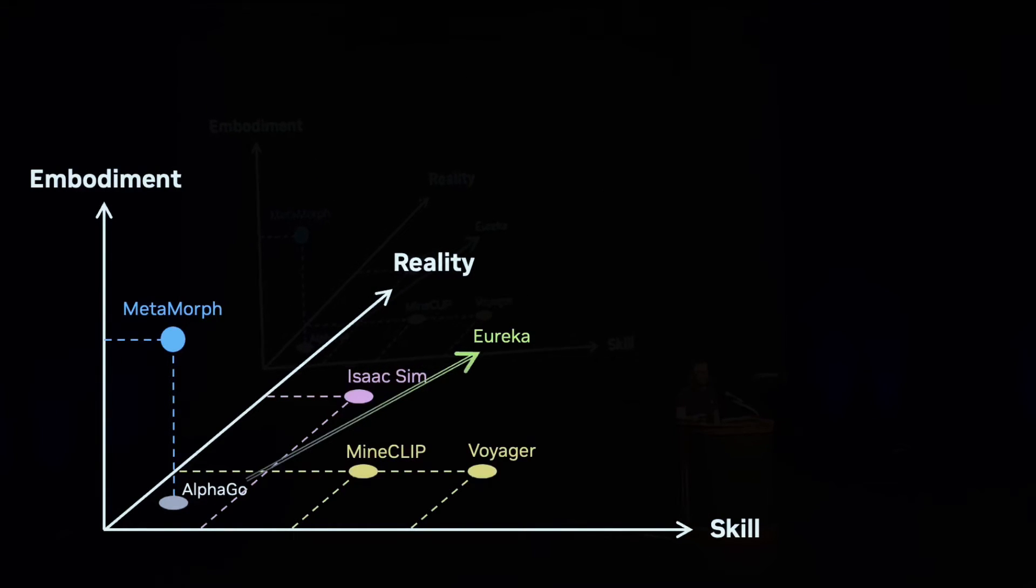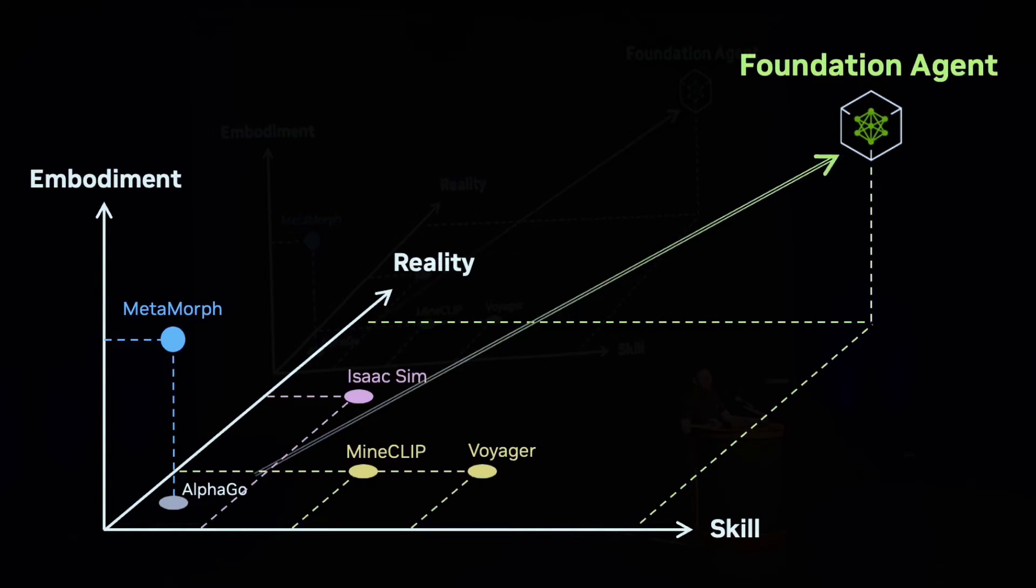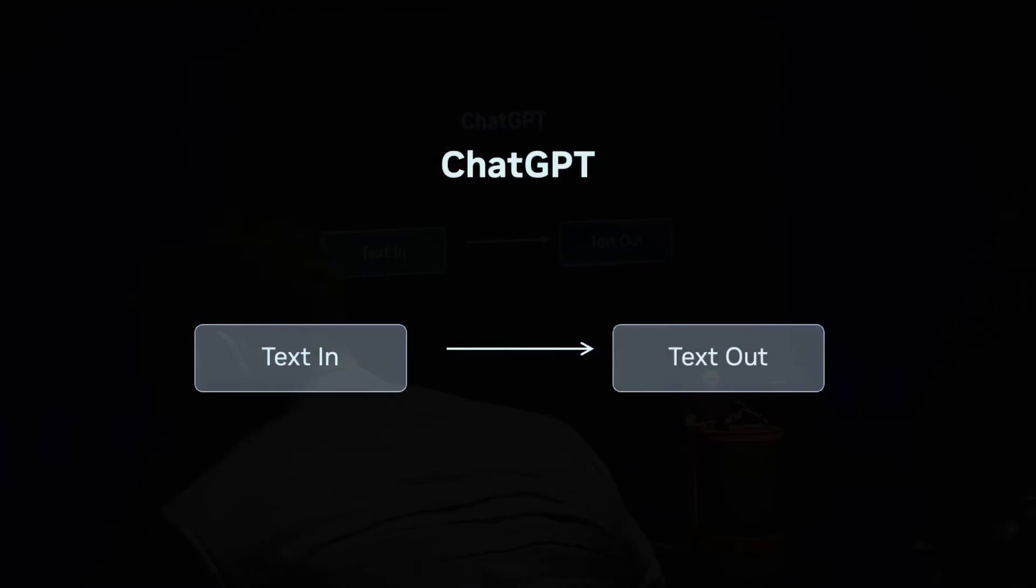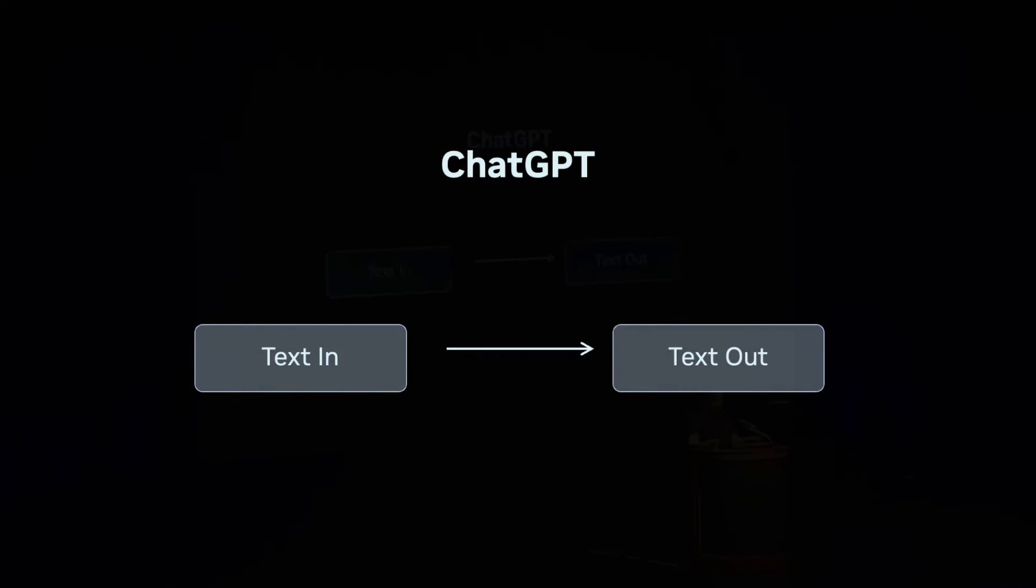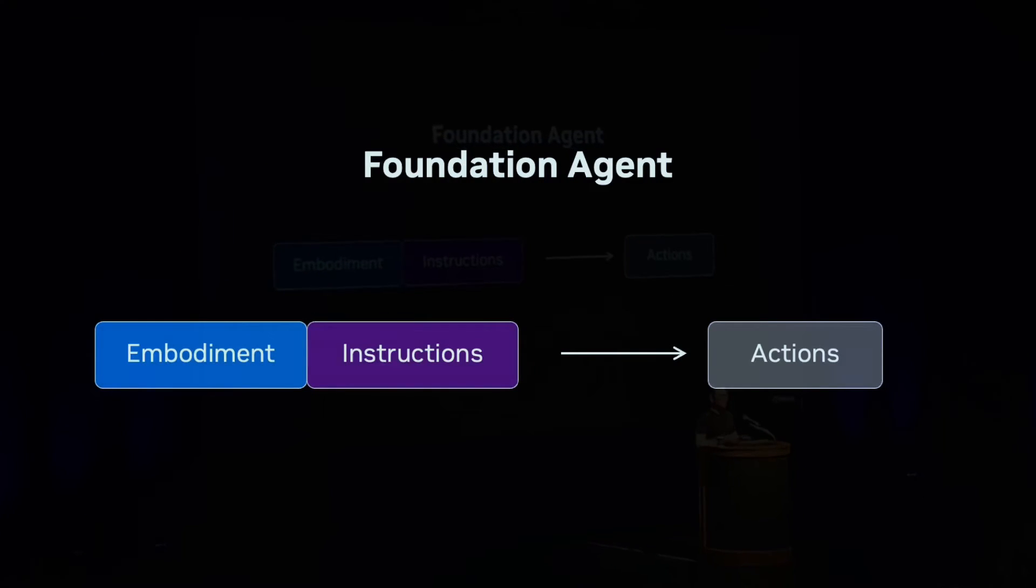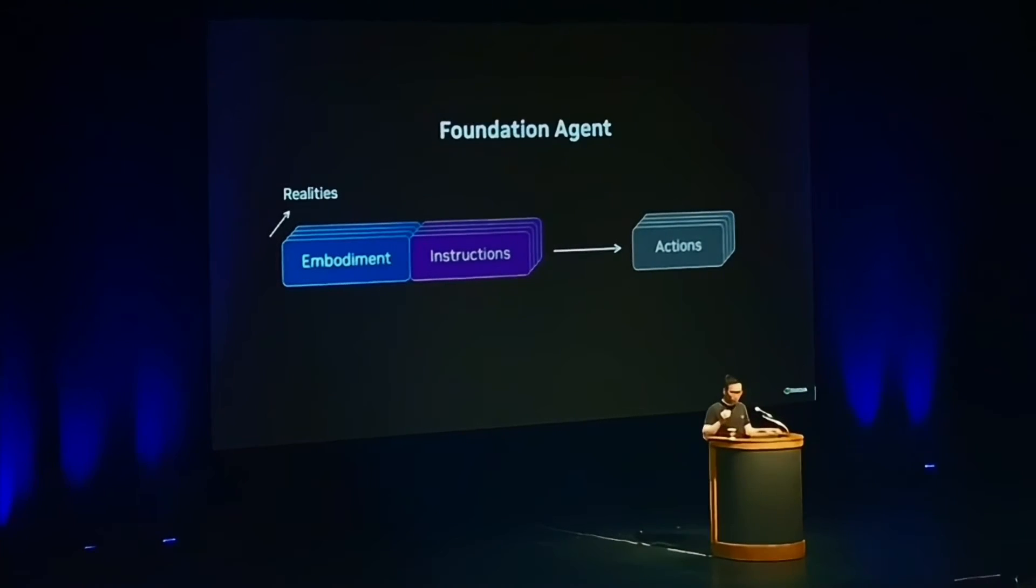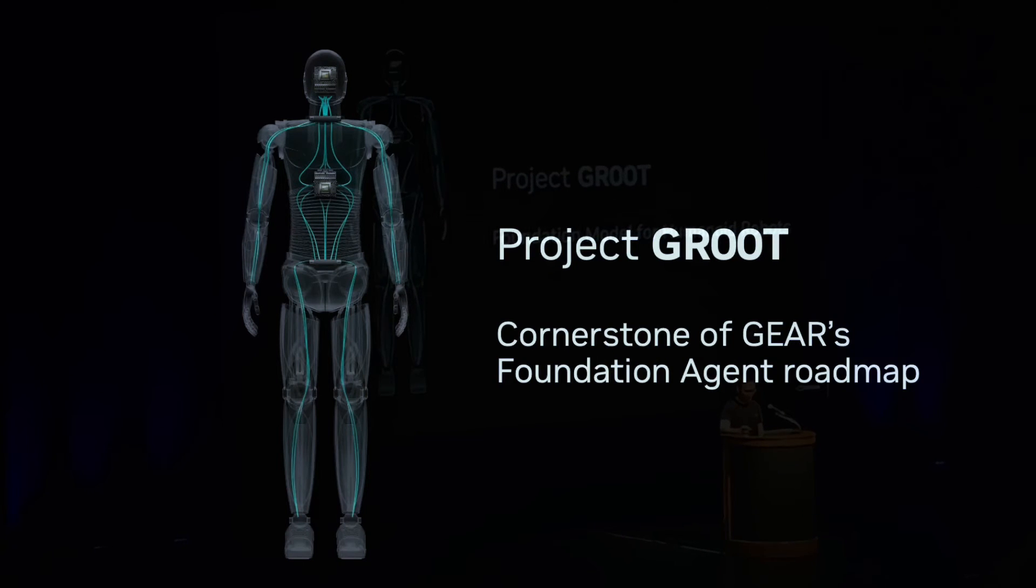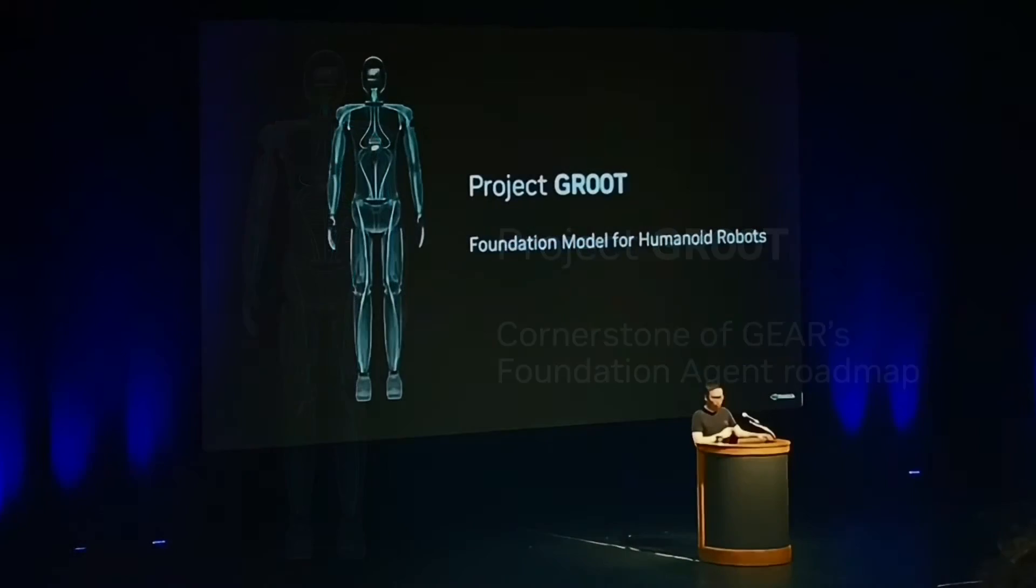As we progress through the map, we'll eventually reach a single model that generalizes across all the three axes. I call that the foundation agent. I believe training foundation agents will be very similar to ChatGPT. All language tasks can be expressed as text in and text out. ChatGPT simply trains it by scaling it up across lots and lots of text. Very similar here, the foundation agent takes as prompt an embodiment specification and a language instruction. Then it outputs actions. We simply scale it up massively across lots and lots of realities. In March, Jensen announced Project Groot at NVIDIA GTC. The mission is to create a foundation model for humanoid robots.